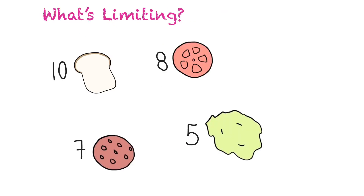Imagine we went to our kitchen and had the following ingredients: 10 pieces of bread, eight tomatoes, five pieces of lettuce, and seven pieces of salami. We want to know which one of these is limiting our reaction.